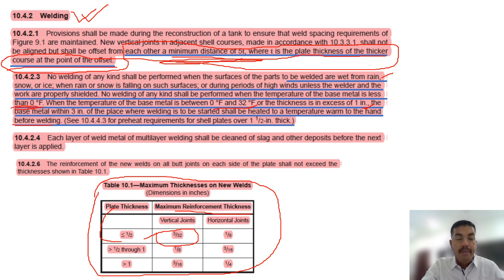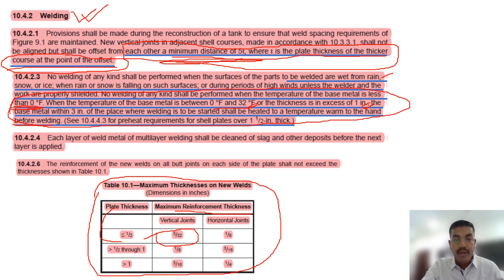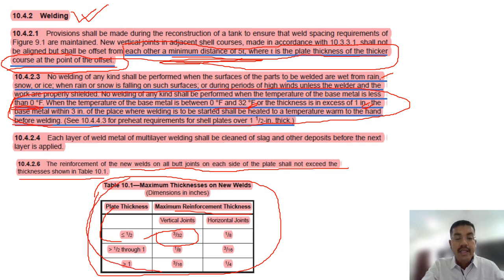Each layer of weld metal — this is a close-book item to remember: below zero degrees Fahrenheit no welding is allowed. If it is zero to 32 degrees Fahrenheit and thickness exceeds one inch, we have to preheat three inches on both sides of the weld to hand-warm temperature. The reinforcement of new weld on all butt joints on each side of the plate shall not exceed the thickness shown in Table 1.1.